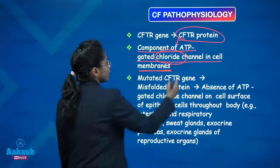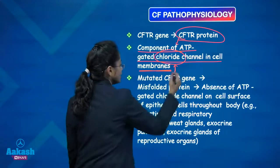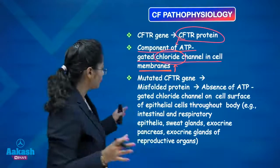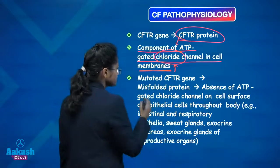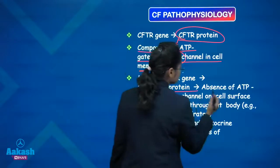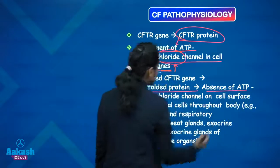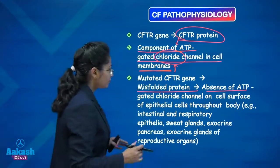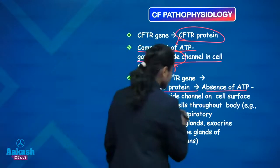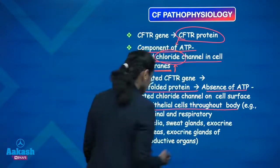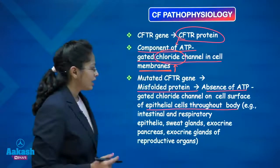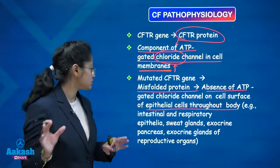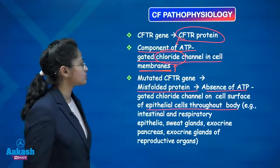Chloride is the ion affected, and because of this, there is a misfolded protein. There is absence of the ATP-gated chloride channels in the epithelial surface of the body, which leads to various manifestations of cystic fibrosis.